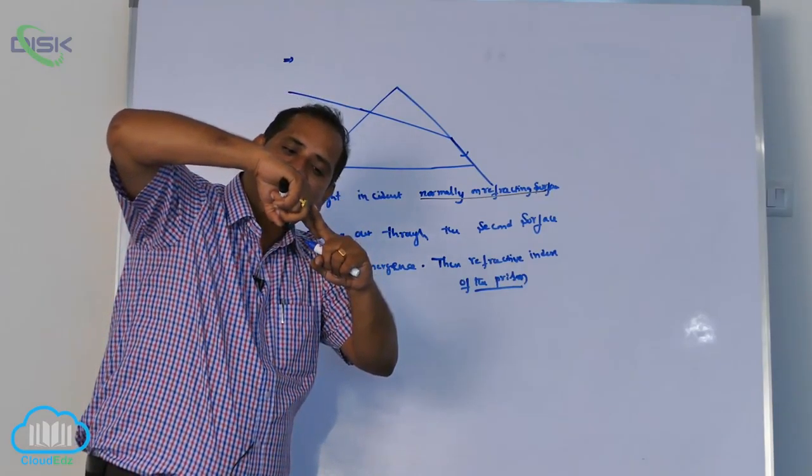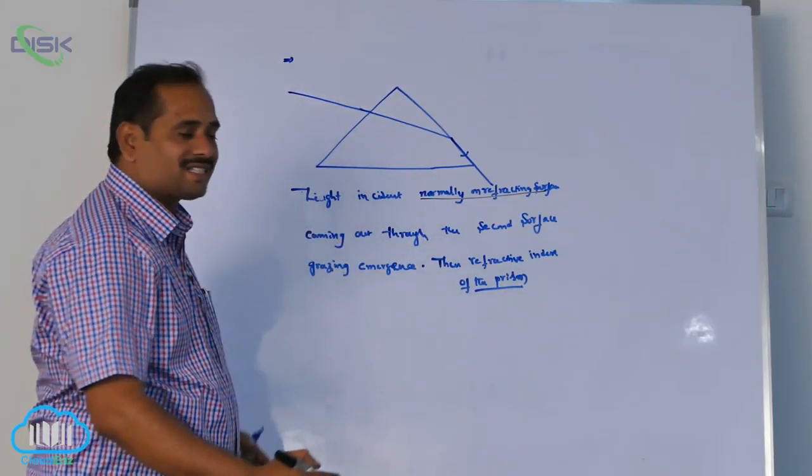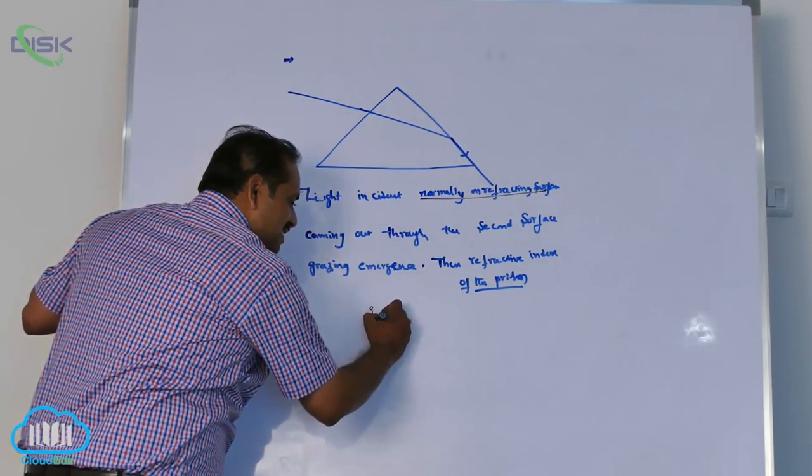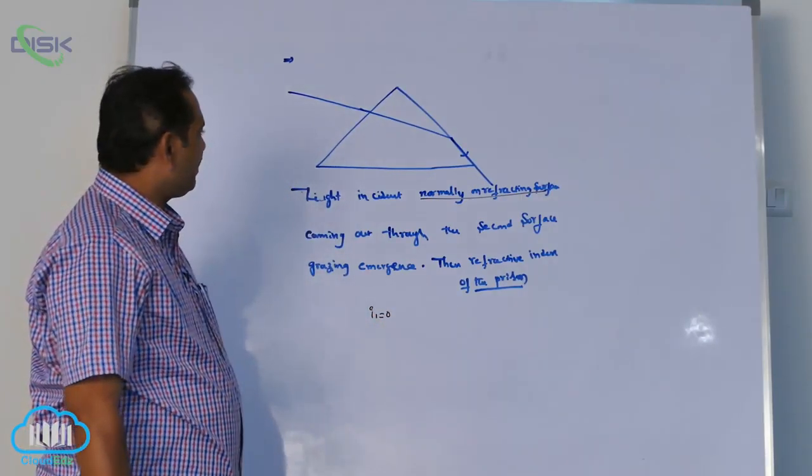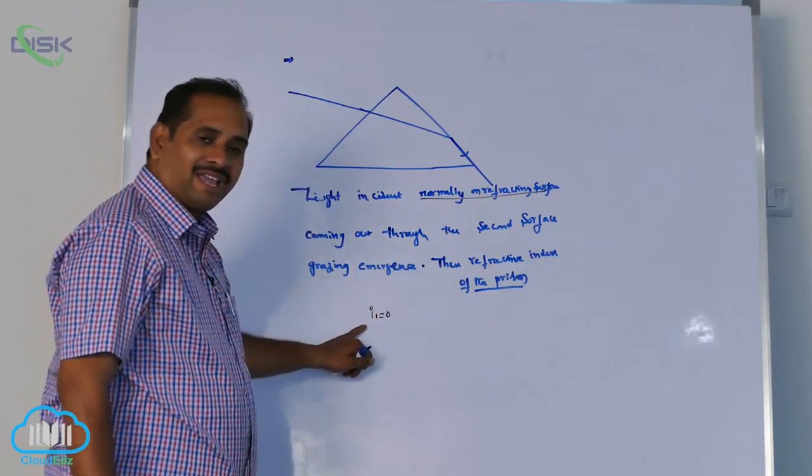light of normal and incidence are coincide. Means angle between them is what? Zero. i1 is zero. Very important thing. Normal incidence means i1 is zero.